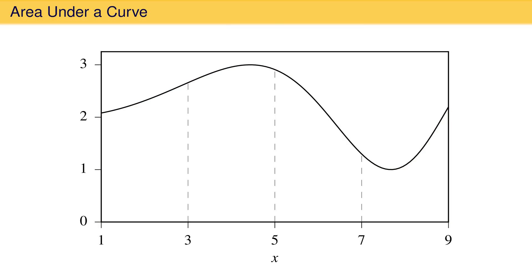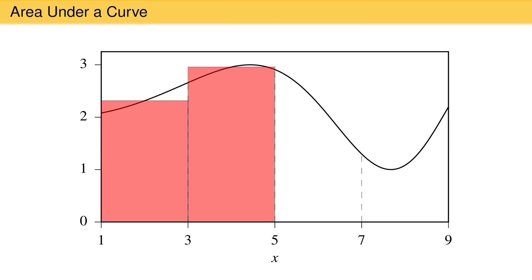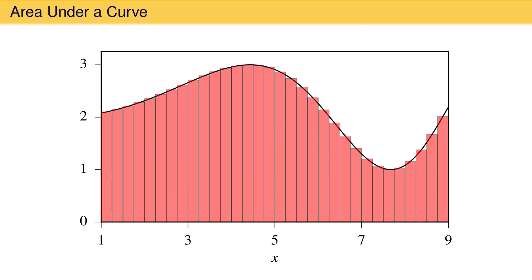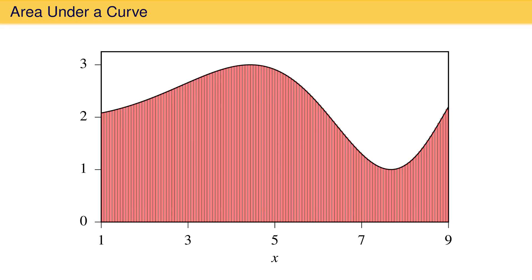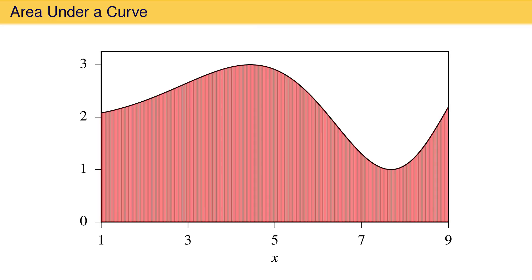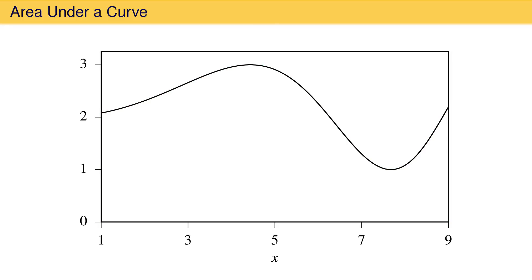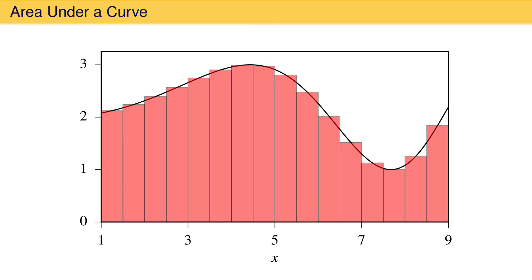We could also fill the four segments with rectangles such that the top center of each rectangle touches the curve. Doubling the number of rectangles once, twice, three times, four times, five times, and six times leads to the same result — the rectangles better fit under the curve, allowing the sum of their areas to provide a good estimate. It does not matter whether we place the rectangles so the curve touches the upper right corner, the center, or the upper left corner, so long as they are narrow enough to fit nicely under the curve.